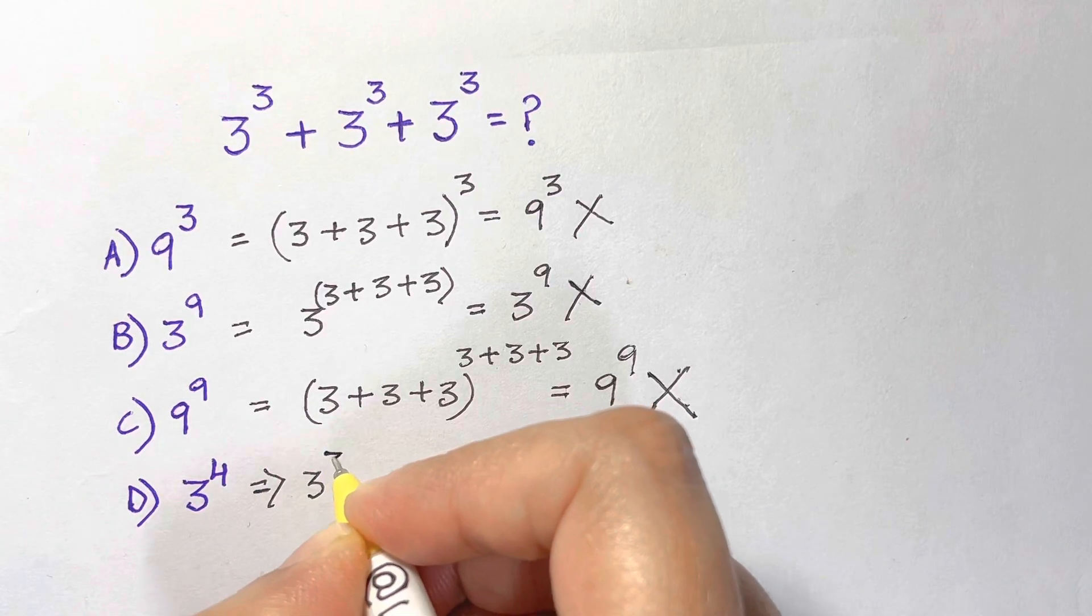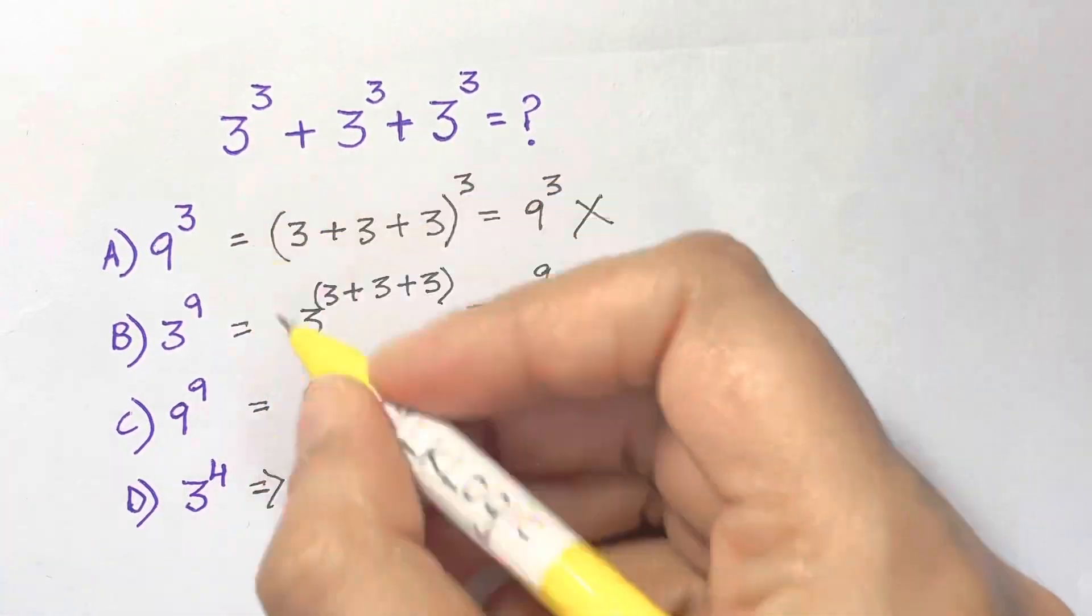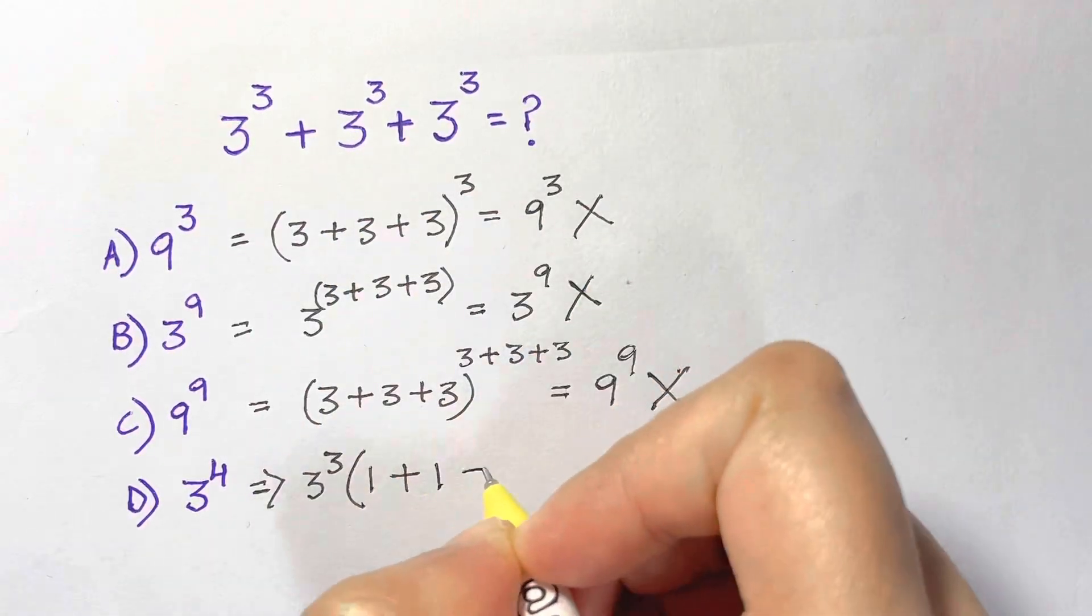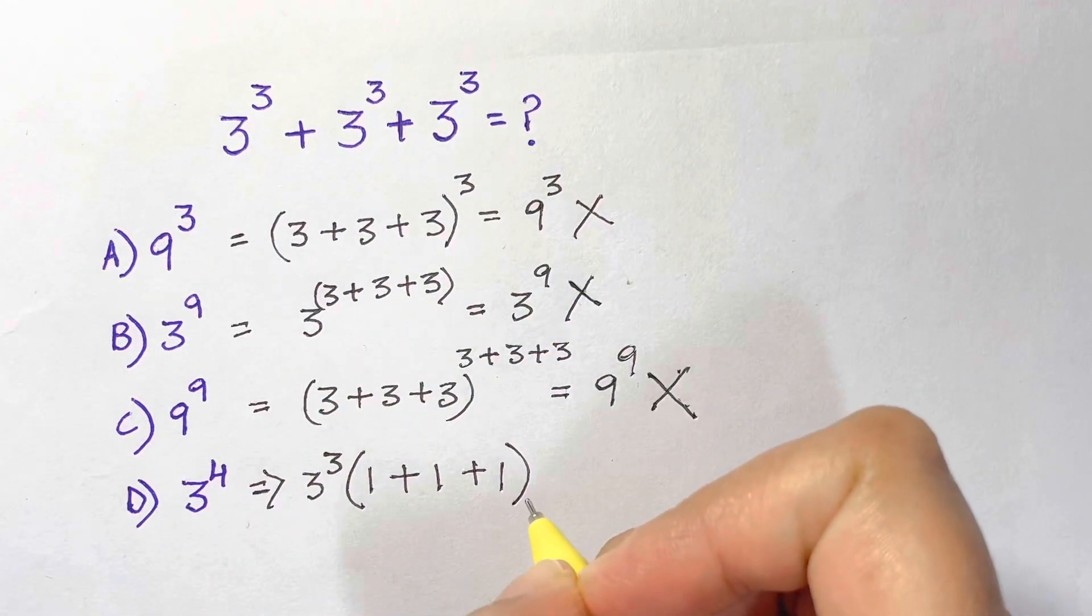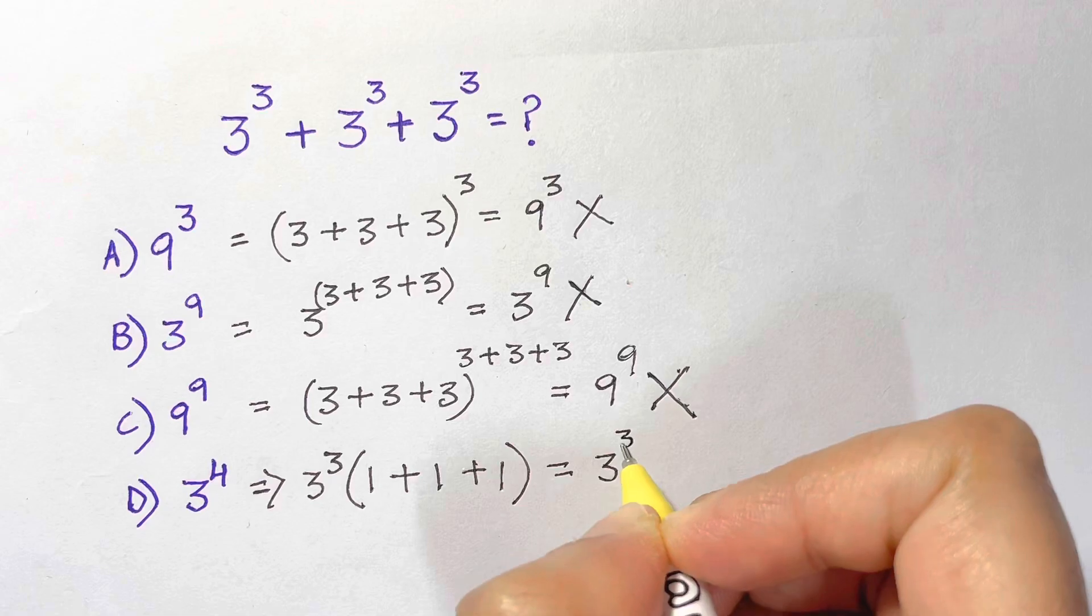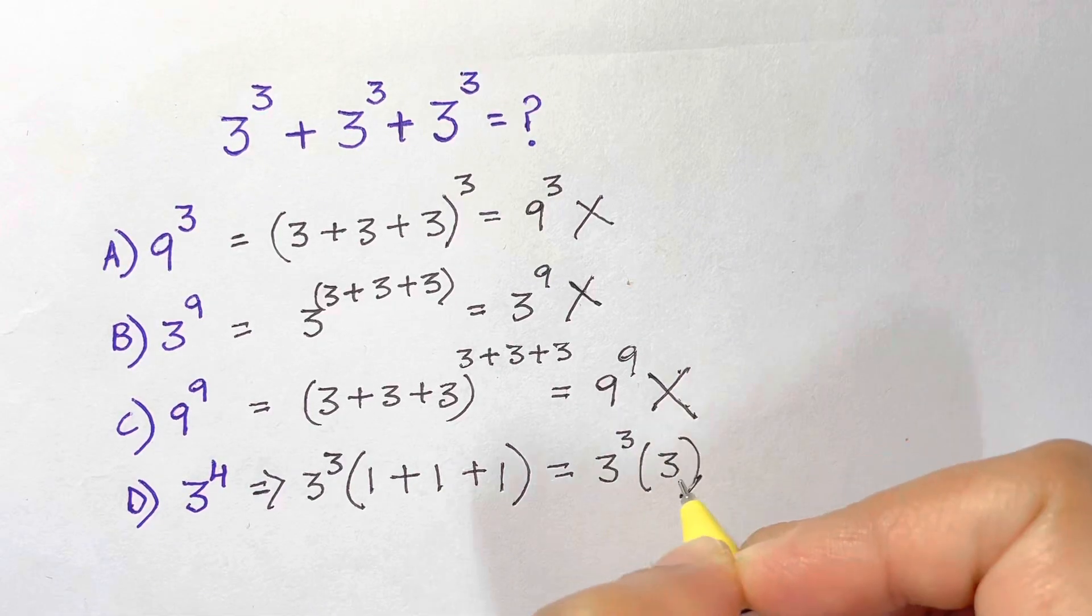We take 3 to the power of 3 common, so when you divide this by this you get 1, this by this 1, this by this you get 1. Now you have 3 to the power of 3 times 3.